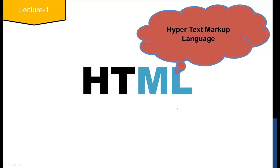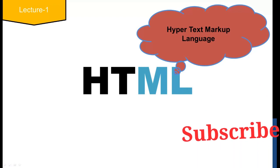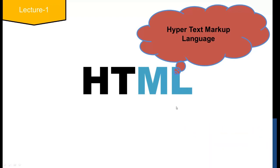Hypertext is the text displayed on a computer which refers to other text or images that the user can access. With HTML we can publish documents, text, headlines, images, and more. We can publish portfolios, business templates, articles, host educational websites — we can do everything in the browser with HTML.